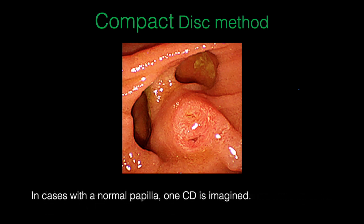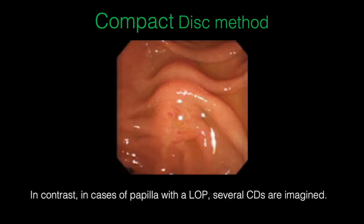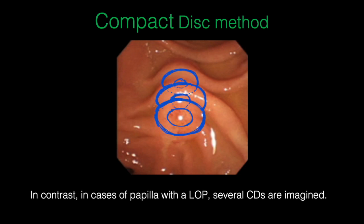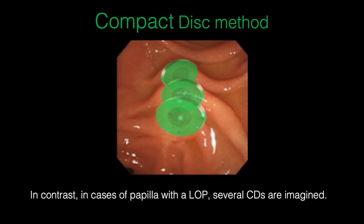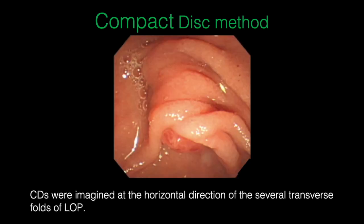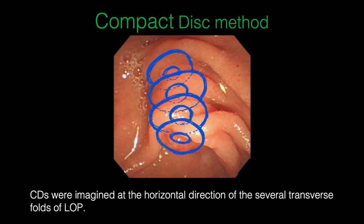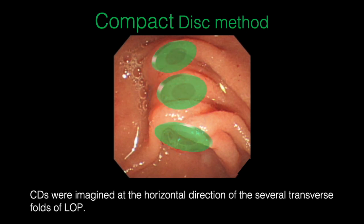In cases with a normal papilla, one CD is imagined. In contrast, in cases of papilla with a long oral protrusion, several CDs are imagined. The CDs are imaged at the horizontal direction of the several transverse folds of the long oral protrusion.